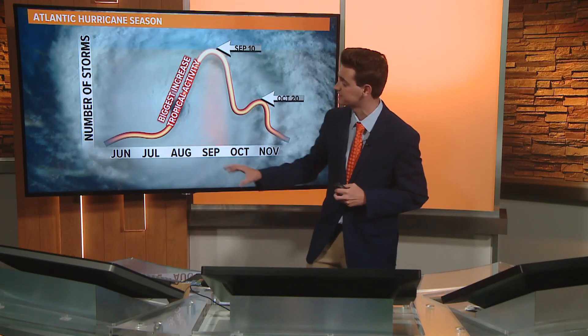The early months of summer are where the most Saharan air dust is typically present, and this correlates on our hurricane activity graph right here — you can see the least number of tropical storms and systems occur from June to early August.